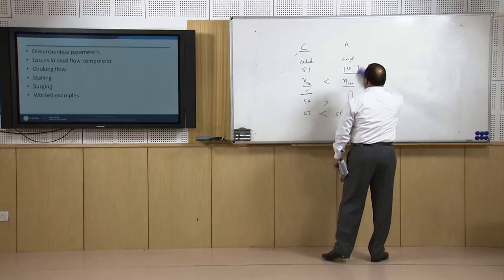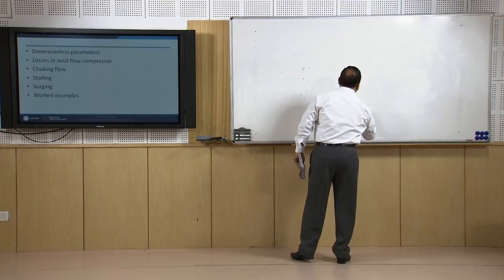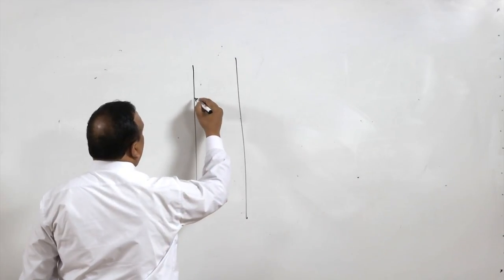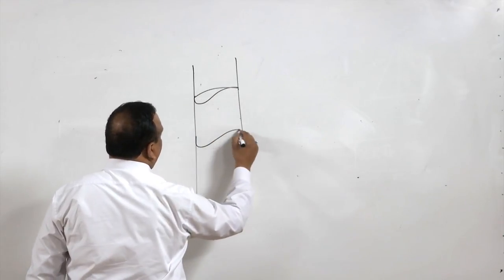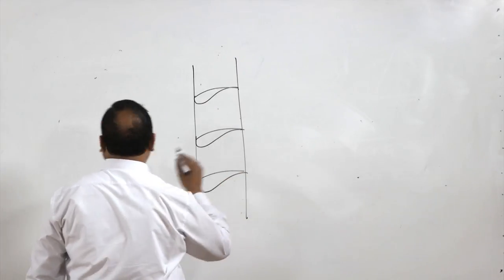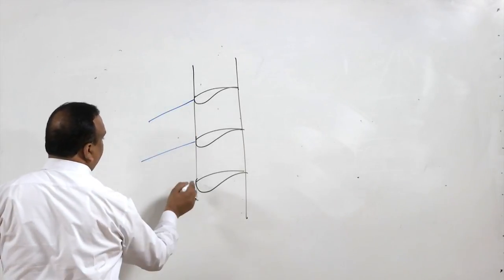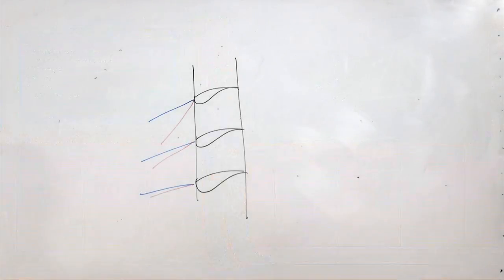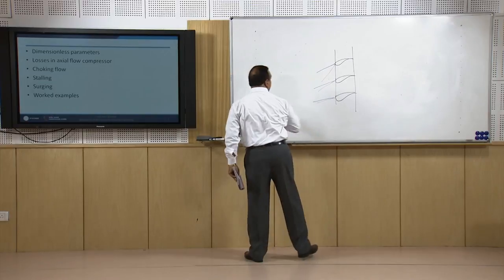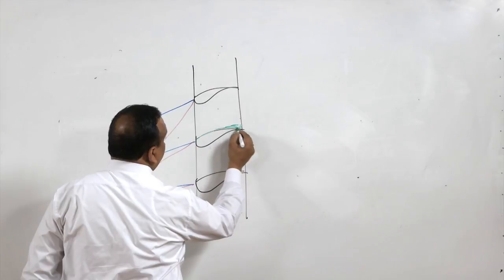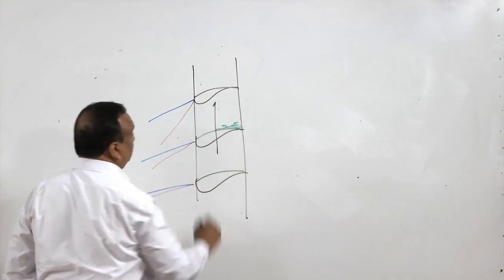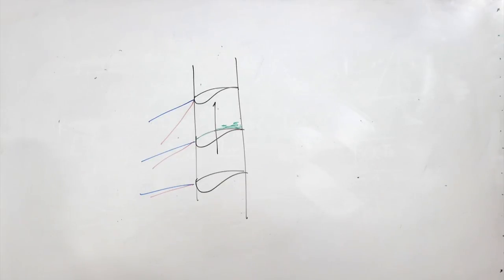There is also the phenomenon of stalling, which is due to a change in the direction of the inlet flow. In a cascade of blades, when the angle of incidence changes to a particular angle, flow separation may take place at the trailing edge of a blade. This is known as a stall. This stall is not stationary — it moves in the opposite direction of the rotor rotation at about half the rotor speed, which is known as a rotating stall.